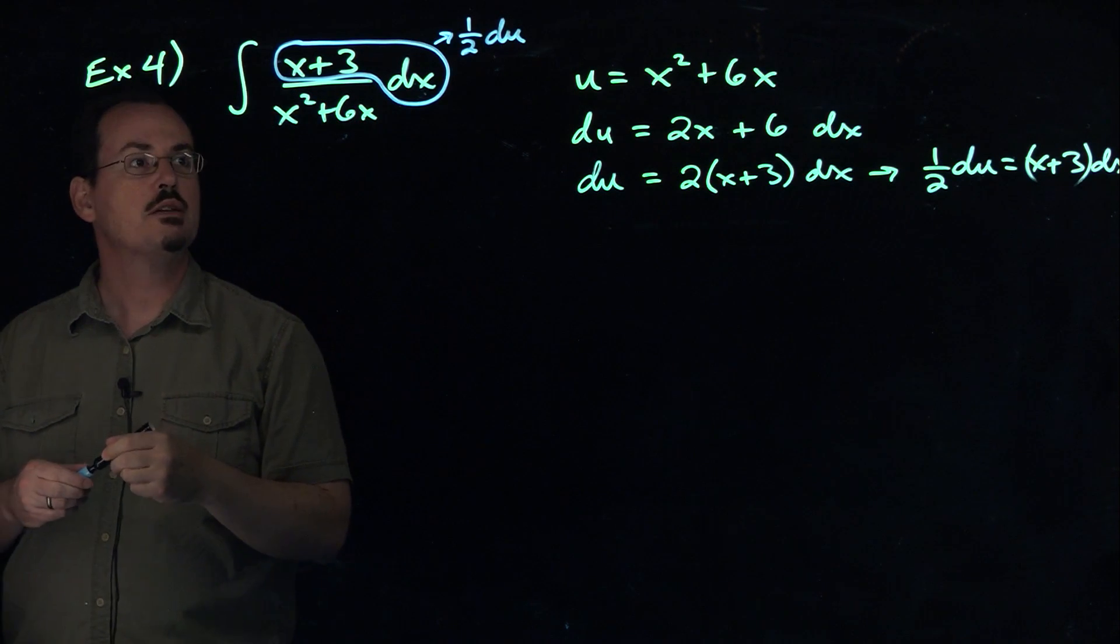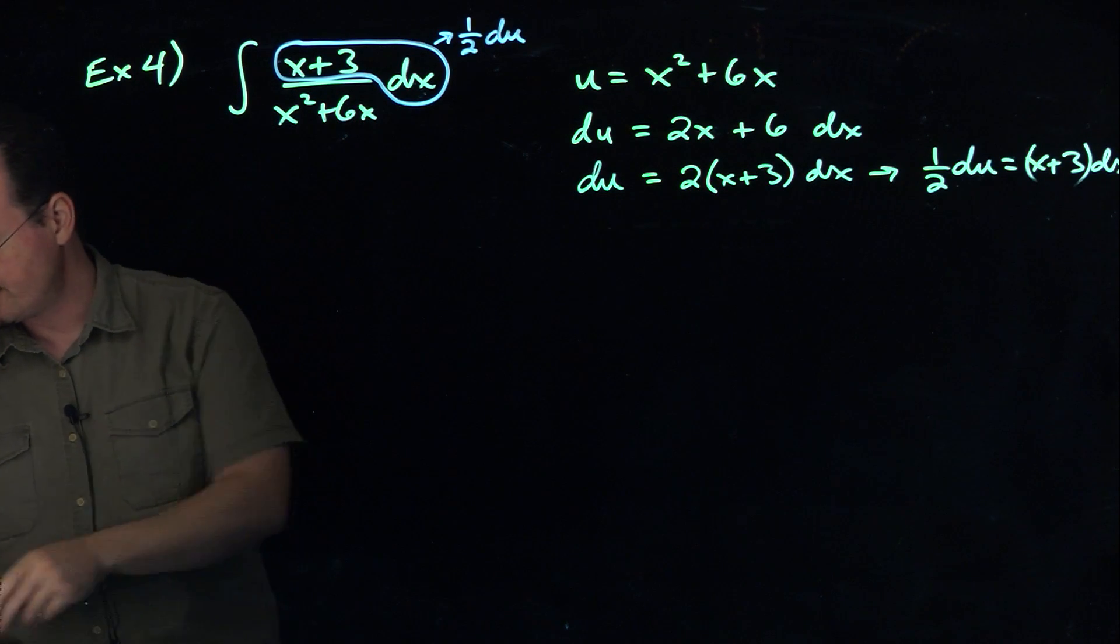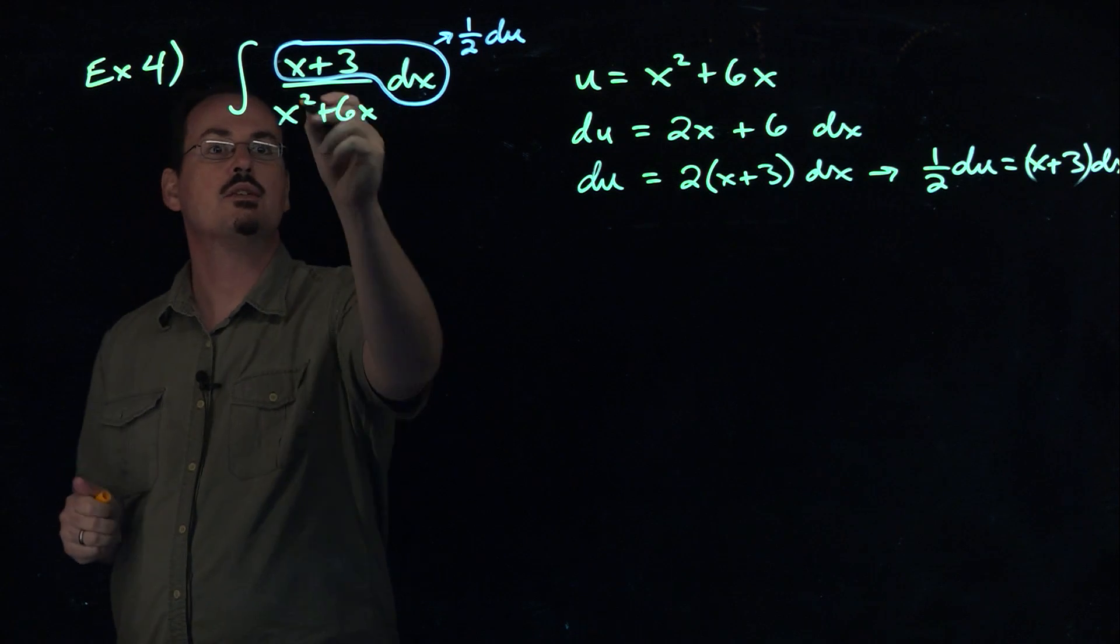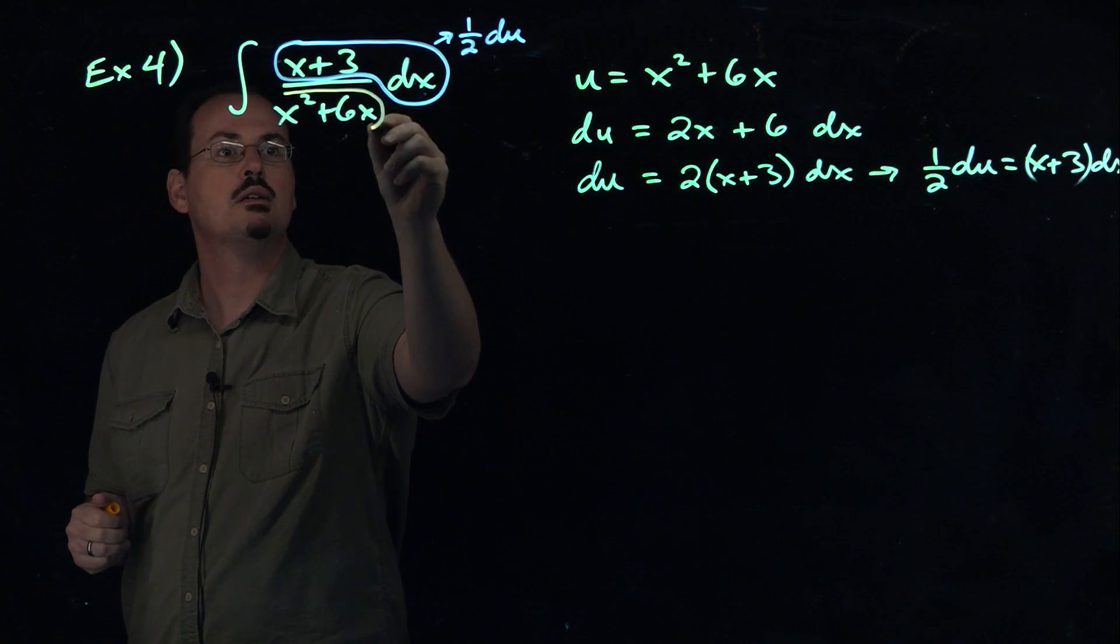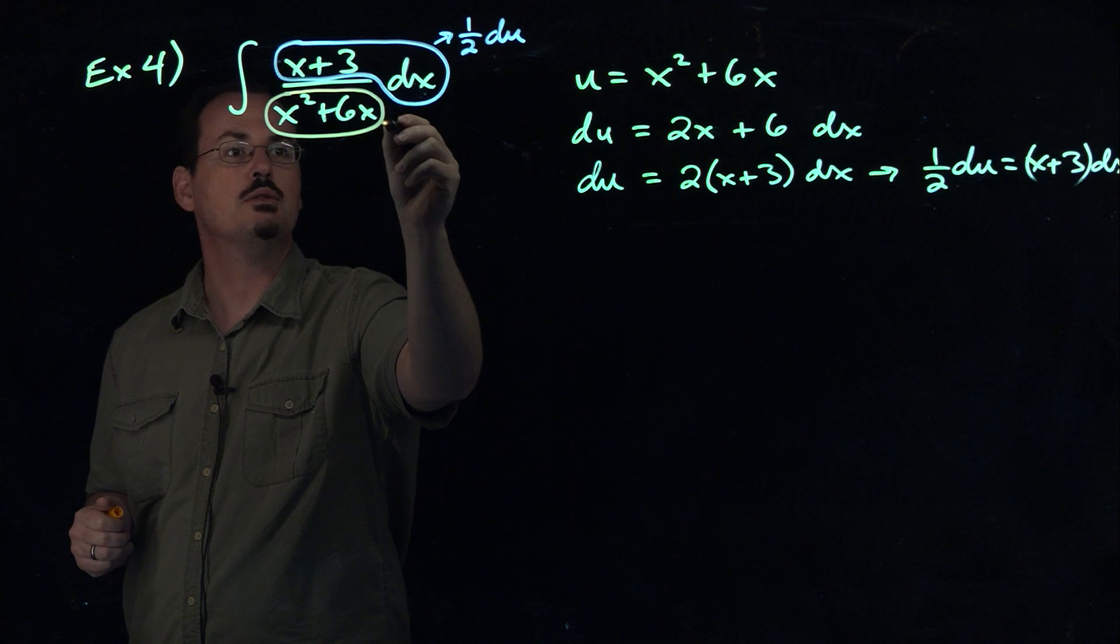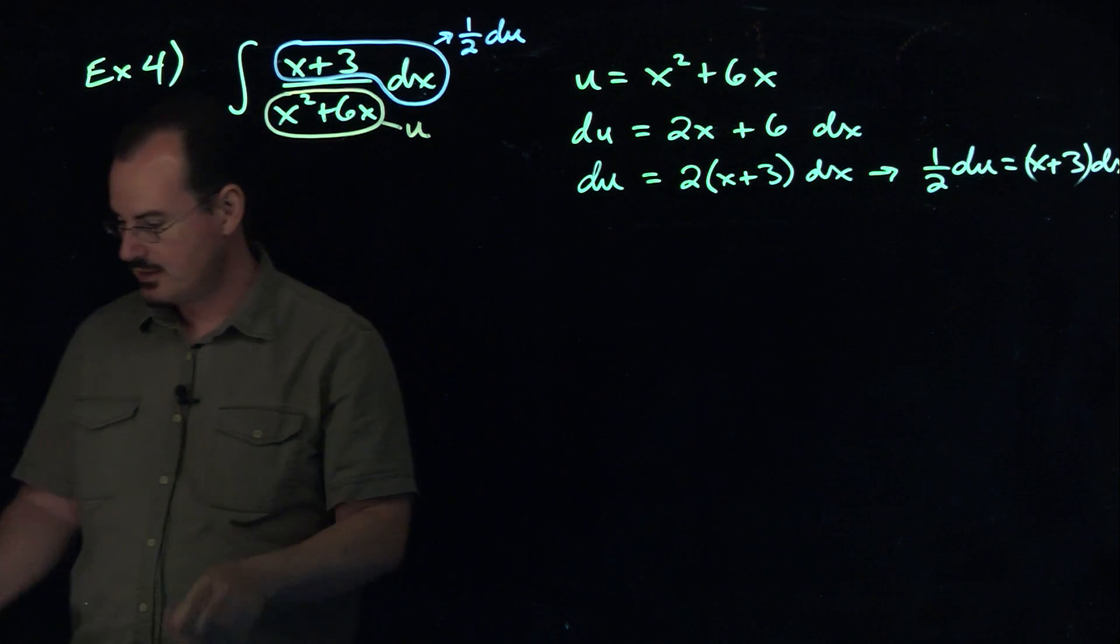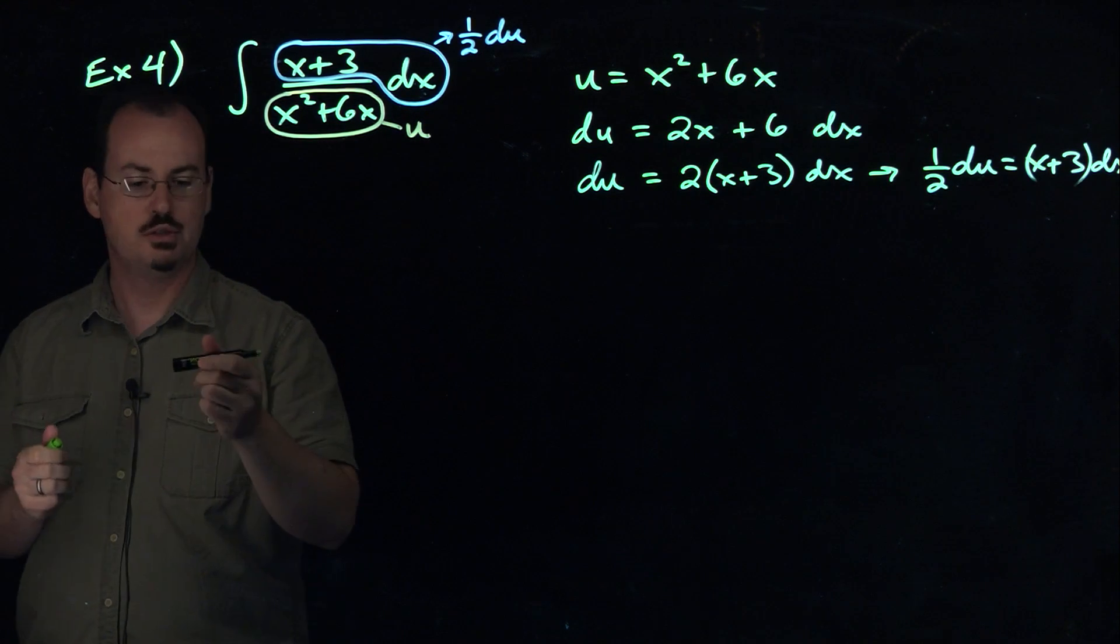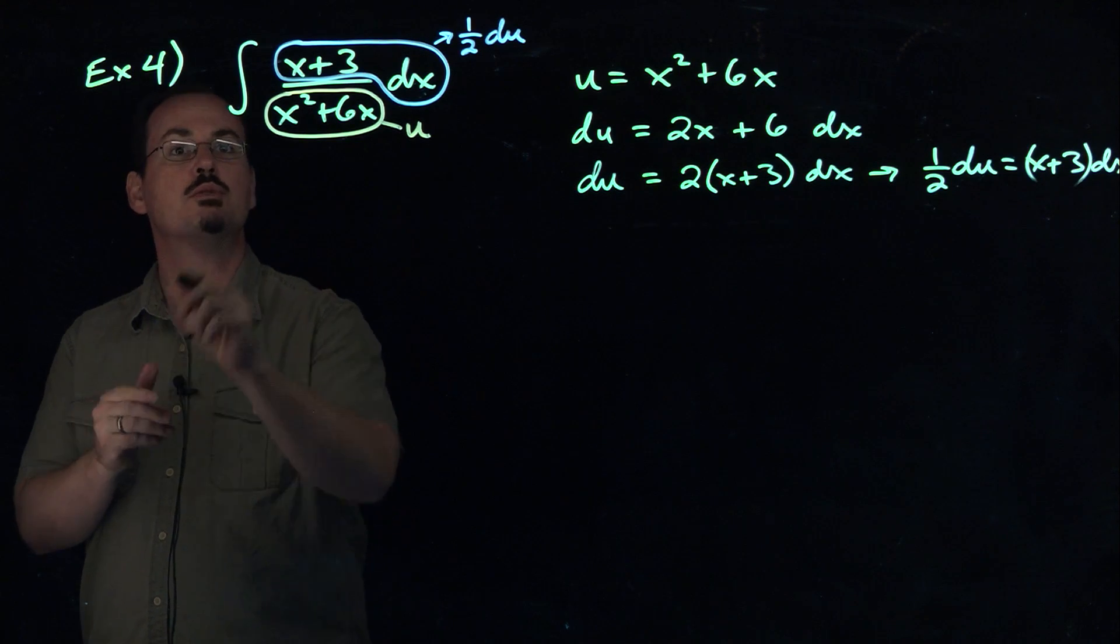And then the denominator, that is going to be just the u. So this is u. Now if we put these things together, that gives us a new integral in terms of u.